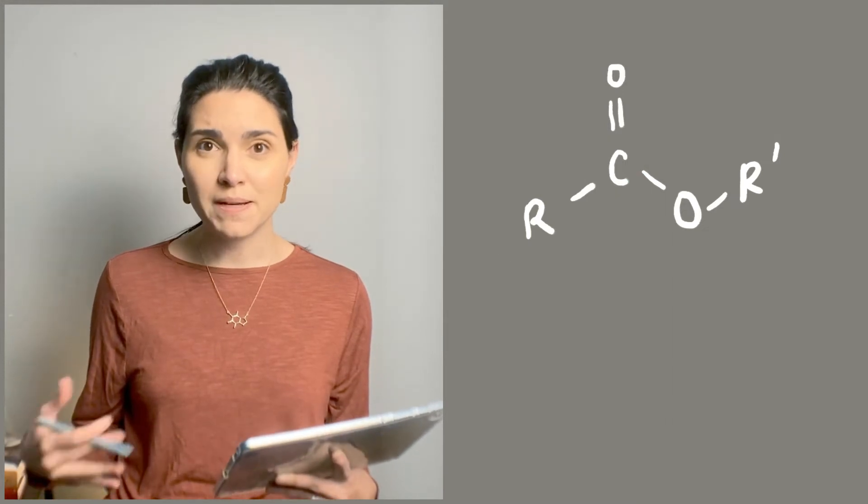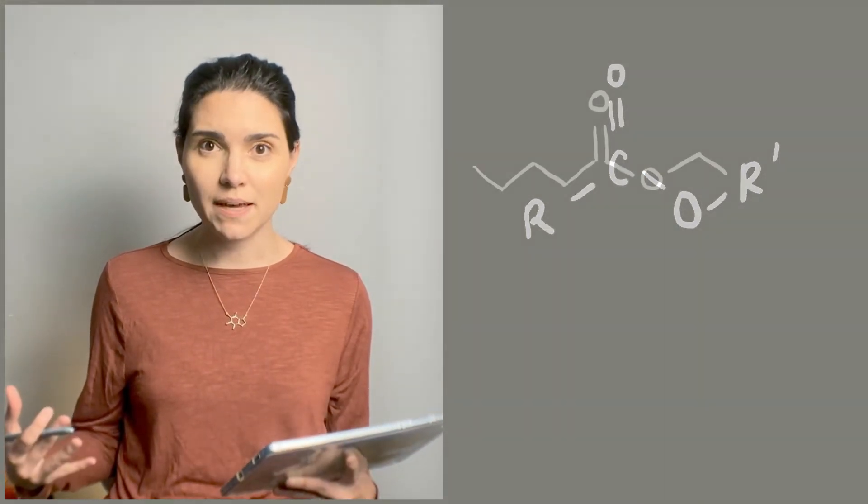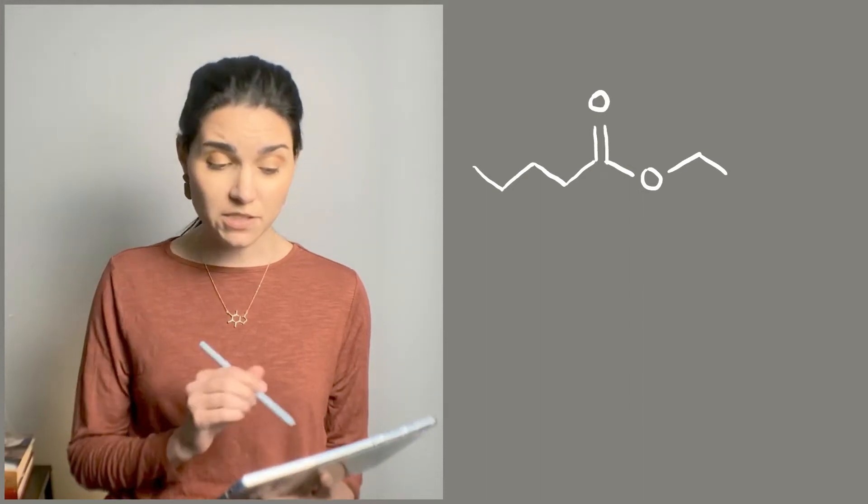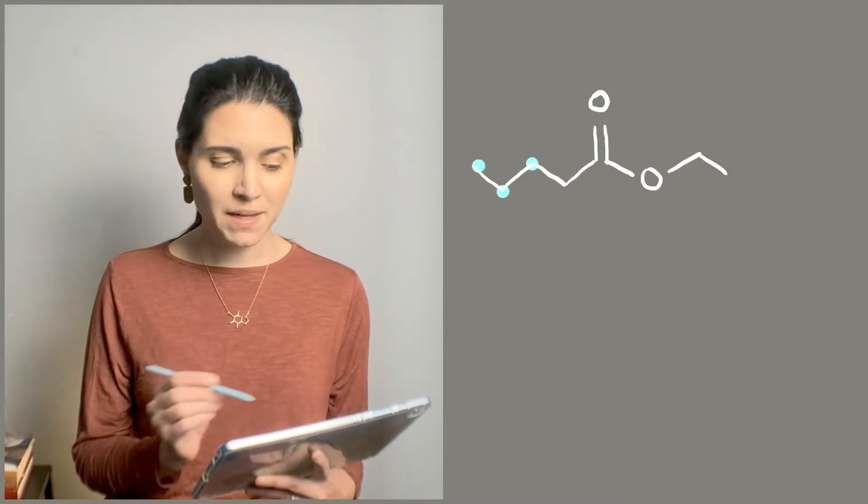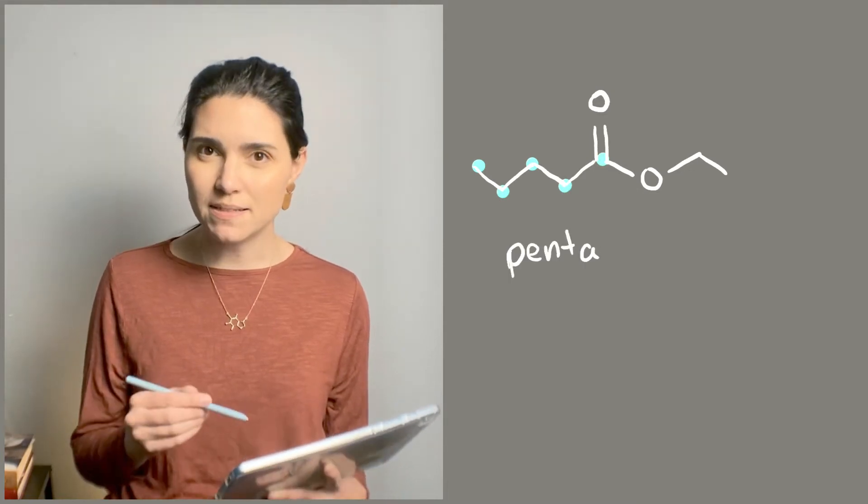Then what you do is start off by naming that chain as a plain alkane. So let's do an example. This ester has five carbons including that C double bond O. So the parent structure name is going to be pentane.